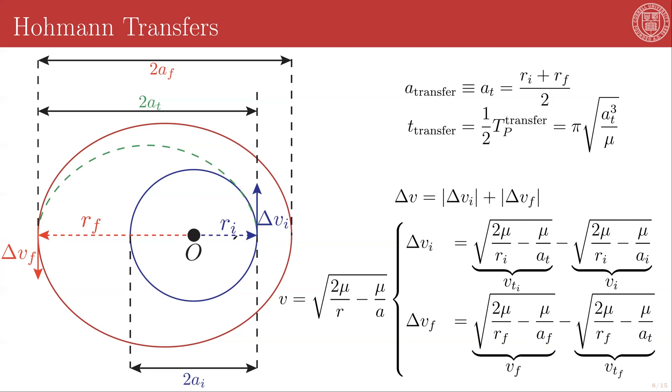And the semi-major axis of this transfer orbit is given by half the sum of your initial orbital radius and your final orbital radius. Given the semi-major axis of the transfer orbit, you can also figure out its period. You are following this transfer orbit for exactly half of its period, and therefore your transfer time is half of the orbital period of the transfer orbit. And then from the VisViva equation and all the other tools that we've developed, you can figure out the magnitudes of the changes in velocity that are required to accomplish this specific transfer.